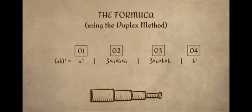This way of solving cubes is called the duplex method. The formula is AB cubed equals A cubed, separation, A times 3 times B times A, separation, 3 times A times B times B, separation, B cubed. This formula can also be divided into four parts, as you can see on the screen.